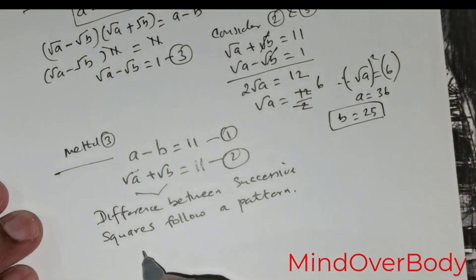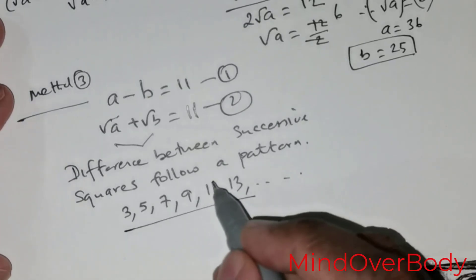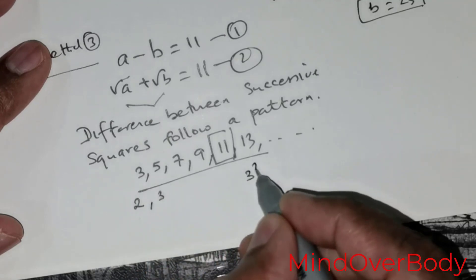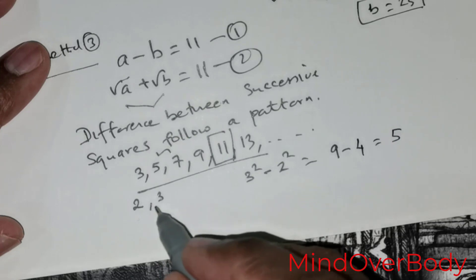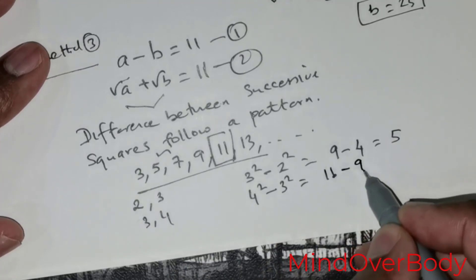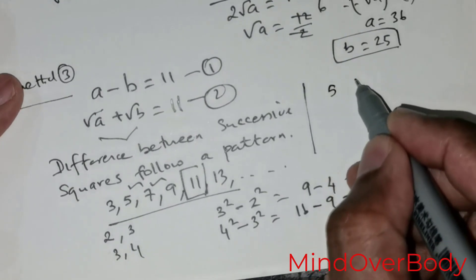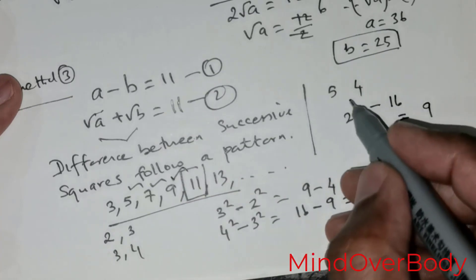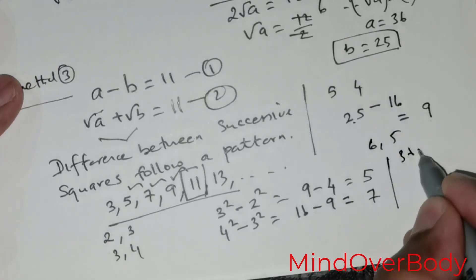The pattern of differences between successive squares starts with 3, 5, 7, 9, 11, 13, and so on. For example: 3 squared minus 2 squared is 9 minus 4 equals 5. Then 4 squared minus 3 squared is 16 minus 9 equals 7. Then 5 squared minus 4 squared is 25 minus 16 equals 9. And 6 squared minus 5 squared is 36 minus 25 equals 11. So 11 is the difference between 36 and 25.